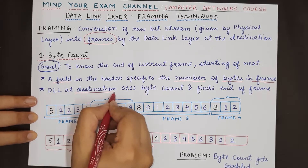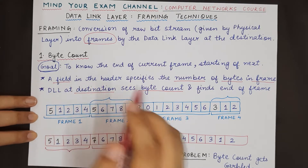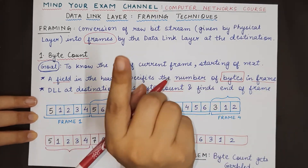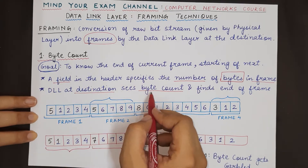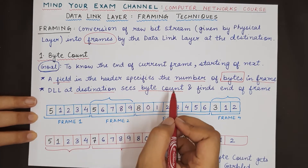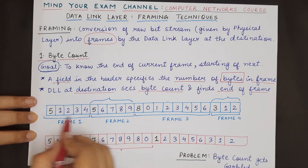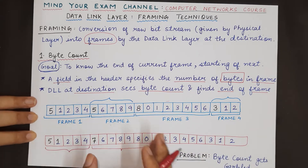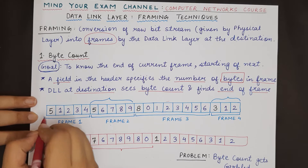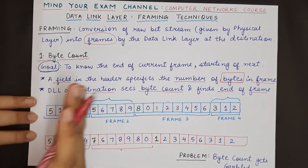This is a very important point — the total byte count includes the header field itself. The data link layer at the destination reads the count present in this field. Note that it counts bytes, not bits — one byte equals eight bits. So this field tells you the number of bytes present in the frame, and the data link layer at the destination uses this count to find the end of the frame. For example, consider a transmission received at the data link layer at the receiver end.